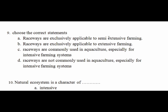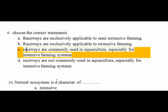Question 9: Choose the correct statement about raceways. A raceway is a flow-through system where a continuous flow of high-quality water is maintained through a canal. Because of the high-quality continuous water supply, raceways can support high stocking densities. Therefore, raceways are well suited for intensive fish farming systems. The correct option is: raceways are commonly used in aquaculture, especially for intensive farming systems.